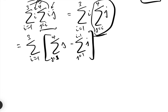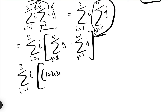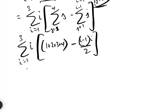So that gives us the sum between i equals 1 and 3 of i times that expression. The sum between j equals 1 and 4 of j is basically just 1 plus 2 plus 3 plus 4. And the sum between j equals 1 and i minus 1 of j is just the sum of the first i minus 1 natural numbers, which equals i minus 1 times i over 2.